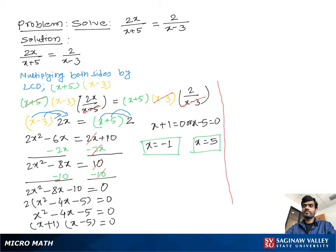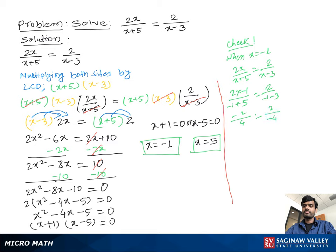Now let's check whether the solutions are correct. When x equals negative 1, we substitute into the original equation: 2 times negative 1 over negative 1 plus 5 equals 2 over negative 1 minus 3. This gives negative 2 over 4 equals 2 over negative 4, which simplifies to negative 1 over 2 equals negative 1 over 2. They are equal, so x equals negative 1 is correct.